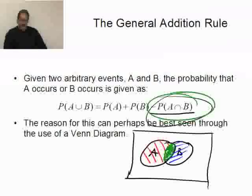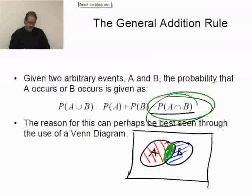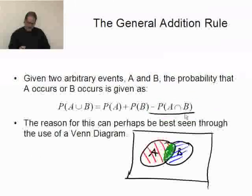Now, in the special case where events A and B are mutually exclusive, that's kind of cool. Because if we know A and B are mutually exclusive,